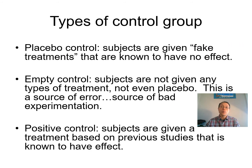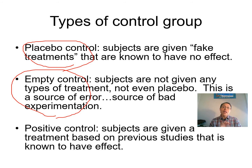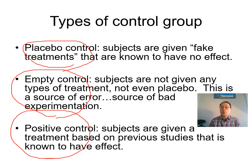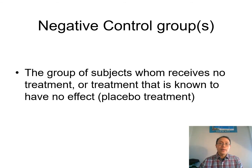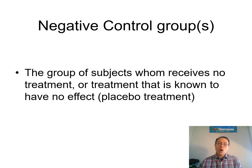So let's look at the types of control groups. There's the placebo control group as discussed, and the empty control group — subjects that received nothing — which is a source of bad experimentation. There is also the positive control group, where subjects are given a treatment based on previous studies known to have an effect. The negative control groups are those that either received no treatment (empty control) or a placebo — basically subjects supposed to receive no real treatment.